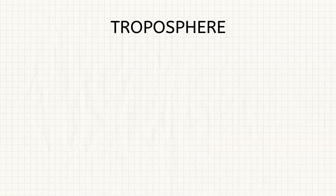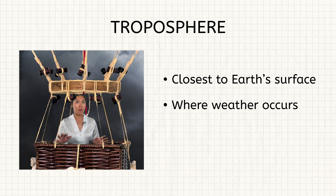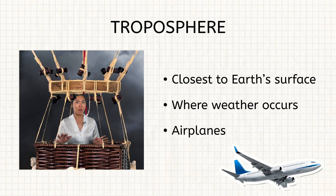First up is the troposphere. This is the layer that you are living in and breathing in right now. Closest to the Earth's surface, this is the dramatic layer. Weather happens here, so it's always changing between rain and sun and wind. Planes fly here too. This layer is super important when we think about weather and climate.